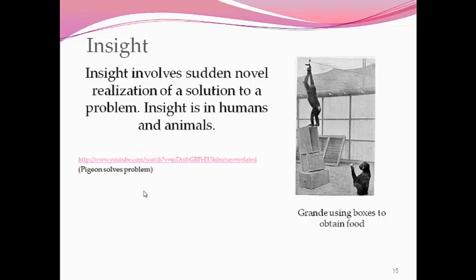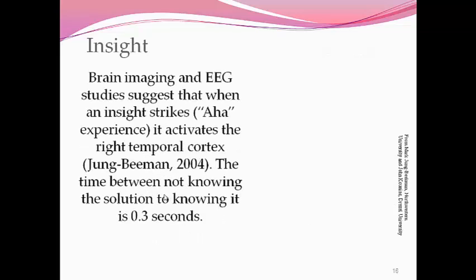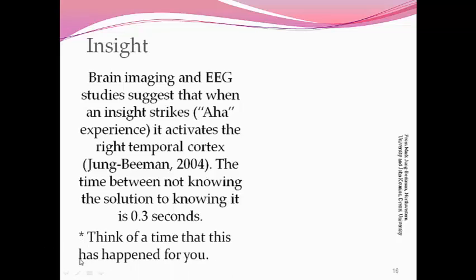Other animals have been demonstrated the ability to use insight. Primates have used this. Very famous experiments with chimpanzees using boxes to obtain food that way too. So insight. We've even imaged a brain and demonstrated on a PET scan where in the brain insight seems to occur. In 2004, Jung and Beeman basically measured the time between not knowing a solution to a problem to knowing that solution. It's about a three-tenth of a second. Can you think of a time when you've had insight occur? I'd like to have a couple of examples when we get to class.